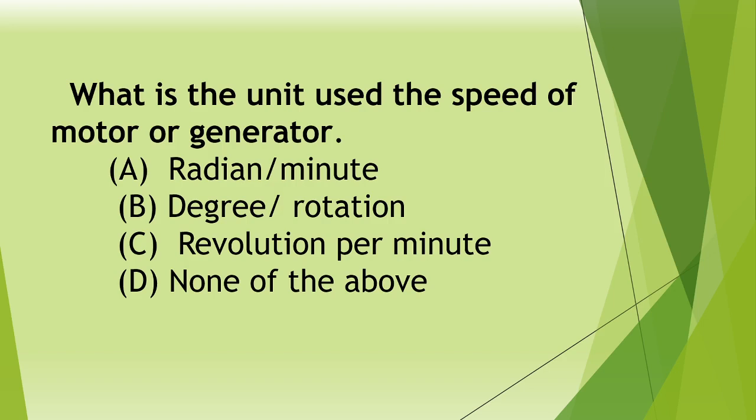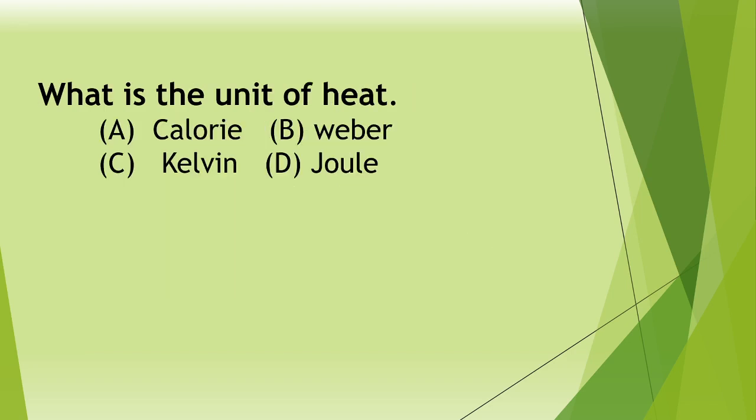Next, what is the unit used for the speed of motor or generator? A Radians per minute, B Degree per rotation, C Revolution per minute, D None of the above. Answer: C Revolution per minute.